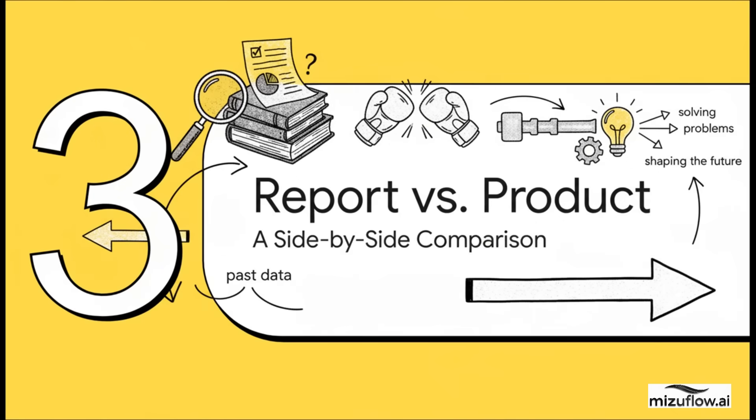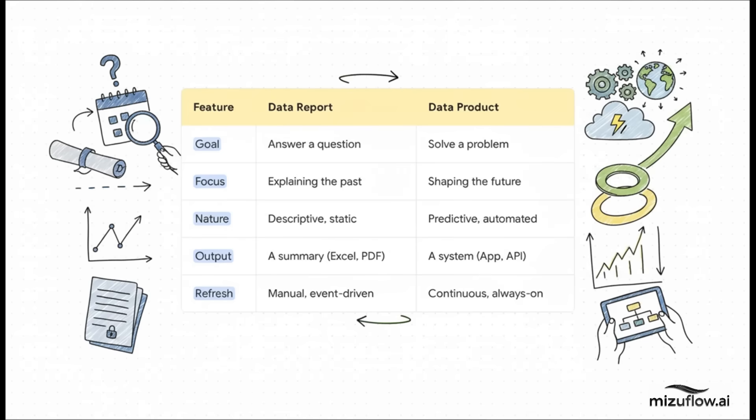Okay, so we've walked down both paths. Now for the main event, report versus product. Let's put them side by side because making this distinction crystal clear is where the real strategic importance for finance just pops right out. And this table just lays it all out, doesn't it?